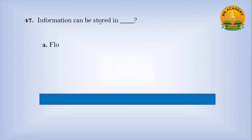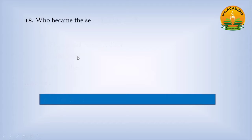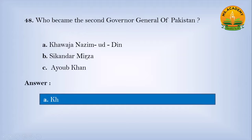Information can be stored in: option A floppy and compact disk, option B hard disk, option C all of these — answer is C, all of these, meaning floppy disk, compact disk, and hard disk. Who was the second Governor General of Pakistan? Option A Khawaja Nazimuddin, option B Iskander Mirza, option C Ayub Khan — answer is A, Khawaja Nazimuddin.